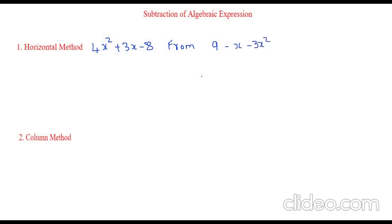Whatever is given after 'from' we will write that first. So it is 9 minus x minus 3x square. This will be inside one bracket or a parenthesis, then a minus sign, and then the next expression which is 4x square plus 3x minus 8.